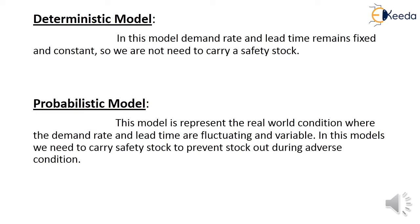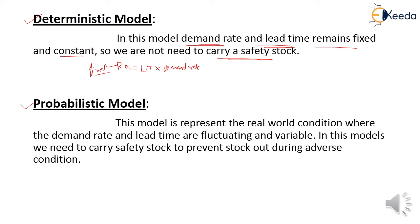There are two types of inventory models: the deterministic model and the probabilistic model. In the deterministic model, the demand rate and lead time remain fixed and constant. Since demand rate and lead time are fixed, the reorder level is also fixed. Therefore, in the deterministic model, we do not need to carry safety stock.